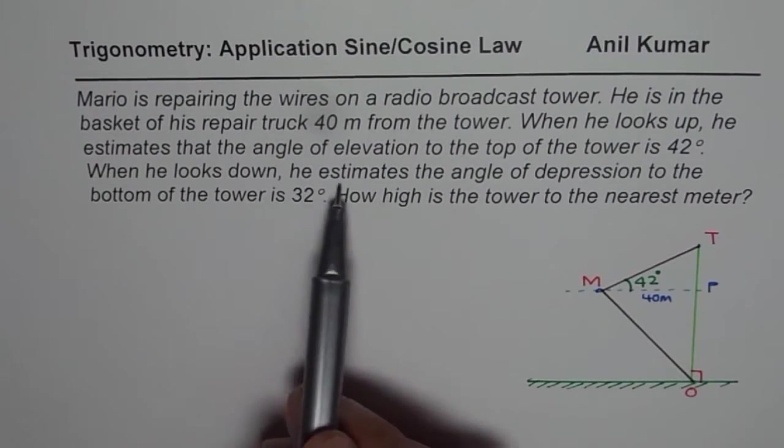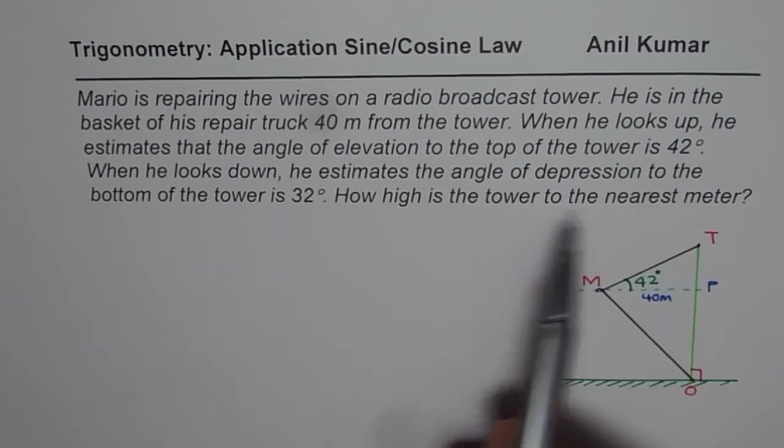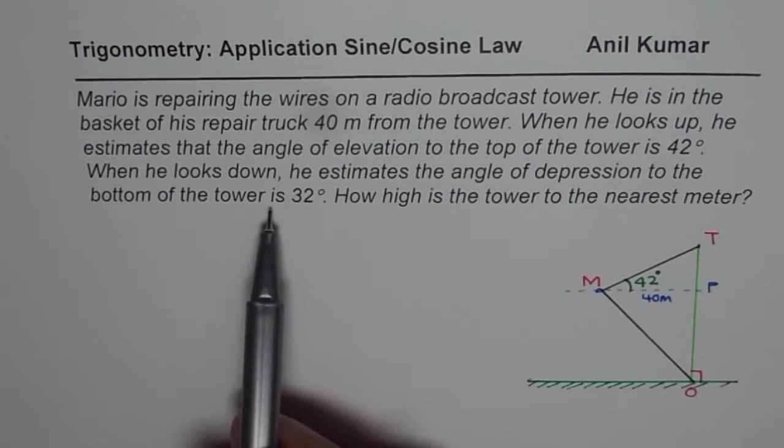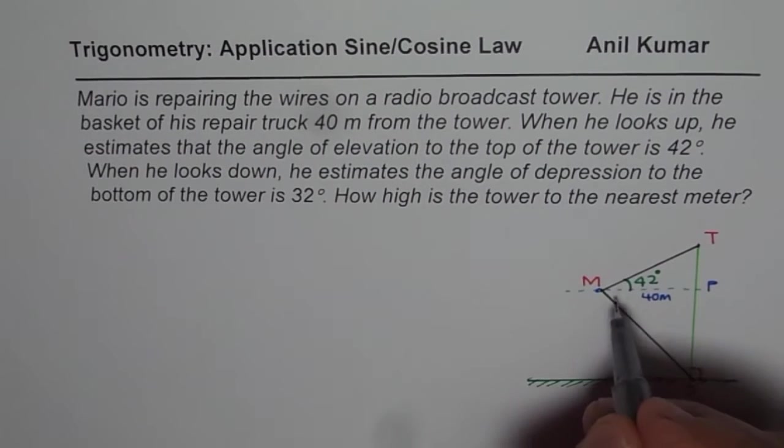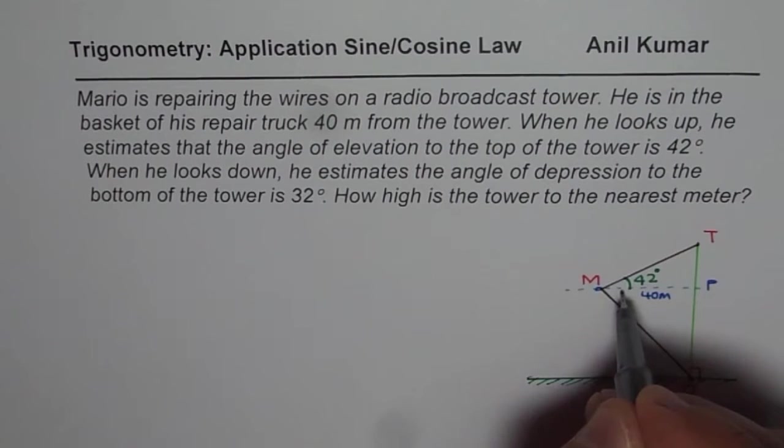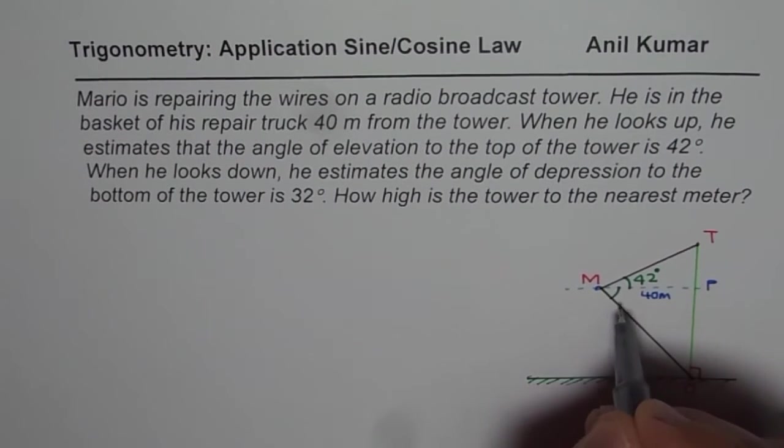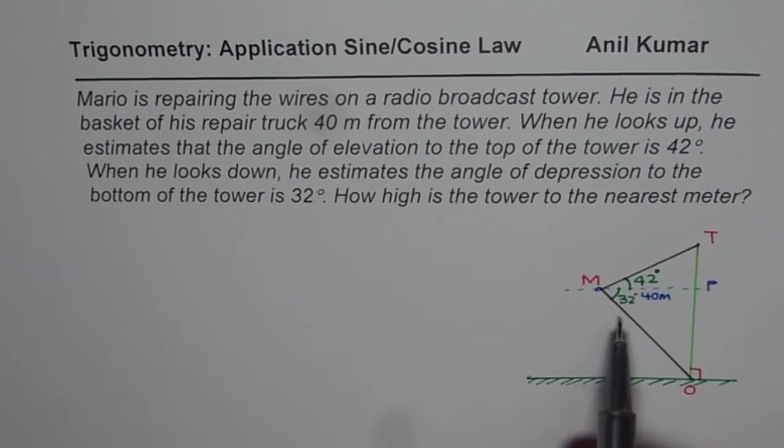When he looks down, he estimates the angle of depression to the bottom of the tower as 32 degrees. Angle of depression is also with the horizontal. So, that is 32 degrees. These are the angles.